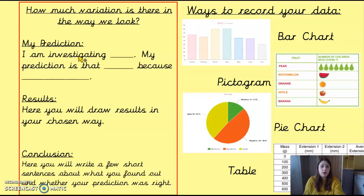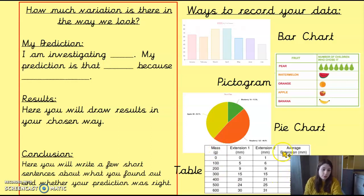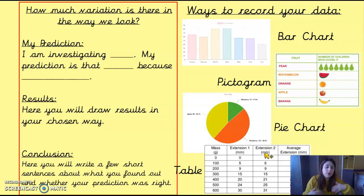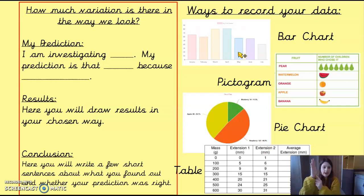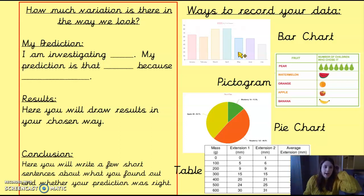Then decide how to present your results. The easiest way is a table — you could have blue, green, brown and just a tally to show your results. For a bar chart, have the different eye colours across the bottom and the number of children going up. If 20 people have blue eyes, draw a bar up to 20. If you really want to challenge yourself, you could try a pie chart, but that is difficult to get right.